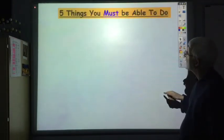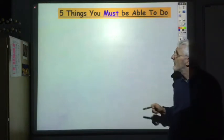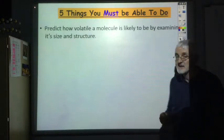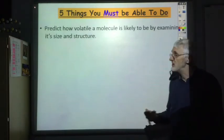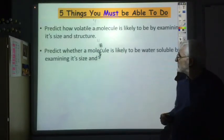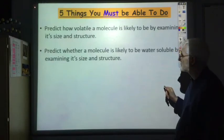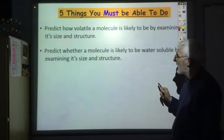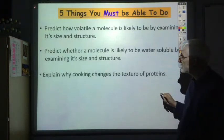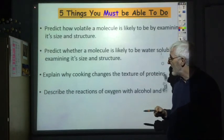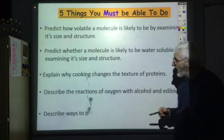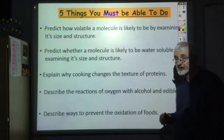So finally, five things you must be able to do. Firstly, predict how volatile a molecule is likely to be or water-soluble by examining its size and structure. Explain why cooking changes the texture of proteins. Describe the reactions of oxygen with alcohols and edible oils. Describe ways to prevent the oxidation of foods.